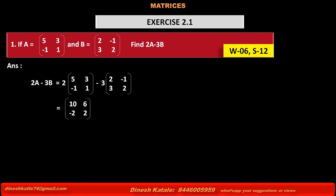Multiplying matrix A by scalar 2 gives the new matrix [10, 6; -2, 2]. Then multiplying matrix B by scalar 3 gives the new matrix [6, -3; 9, 6].